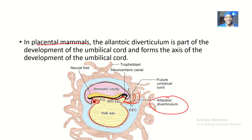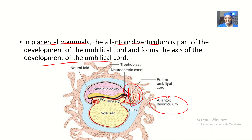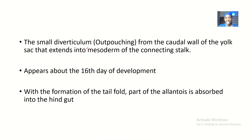In placental mammals, the allantoic diverticulum is part of the development of the umbilical cord, and it forms the axis of the development of the umbilical cord. This whole structure is supposed to become the future umbilical cord. You can see the allantoic diverticulum within the future umbilical cord structure, and it directs the development of the umbilical cord. So that's the main role of the allantoic diverticulum.